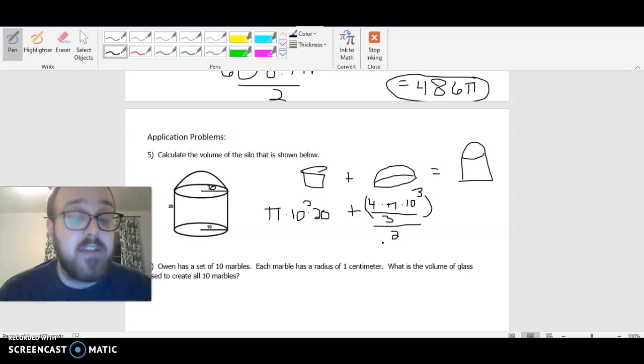Now I'll go ahead and calculate each of these and add them together, and that will give me the entire volume of the silo. Go ahead on your own, multiply these in your calculator, use 3.14 for π, tell me what answers you get, and then add them together and give me the whole silo. I'll pause the video, and then when you come back, we'll have the answer.